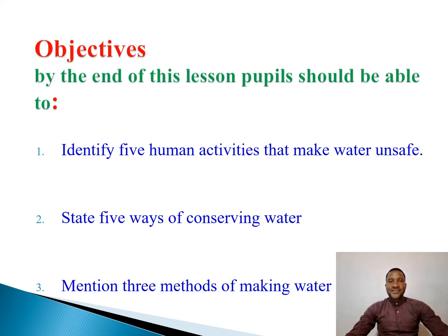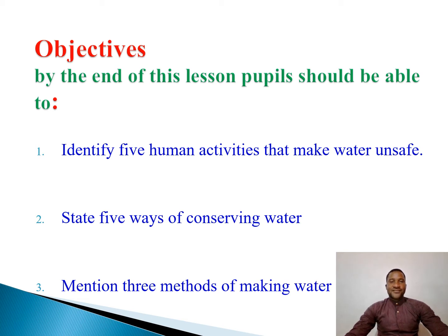Let us see our objectives — what the lessons cover by the end of this lesson. Objective 1: by the end of this lesson, people should be able to identify five human activities that make water unsafe. Objective 2: people should be able to study five ways of conserving water. Objective 3: people should be able to mention three methods of making water safe or clean for human use.